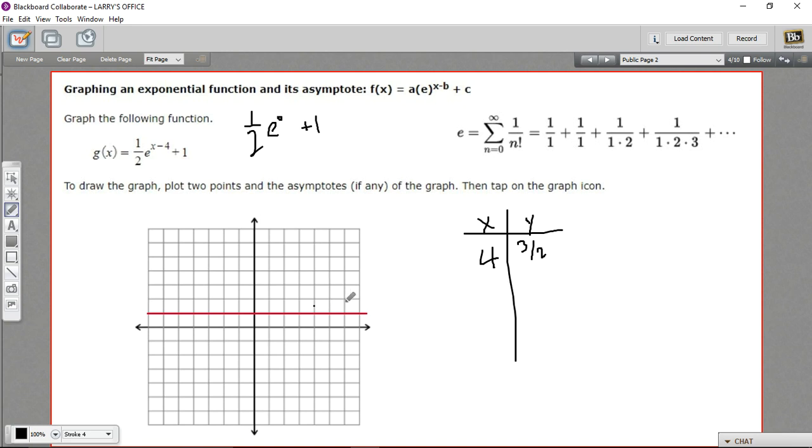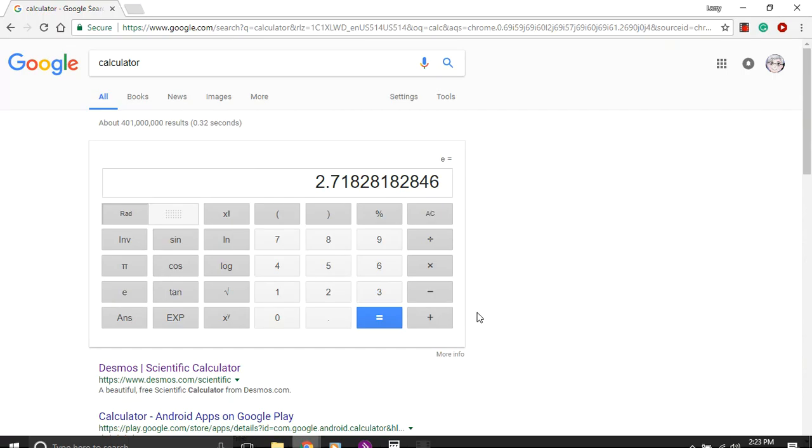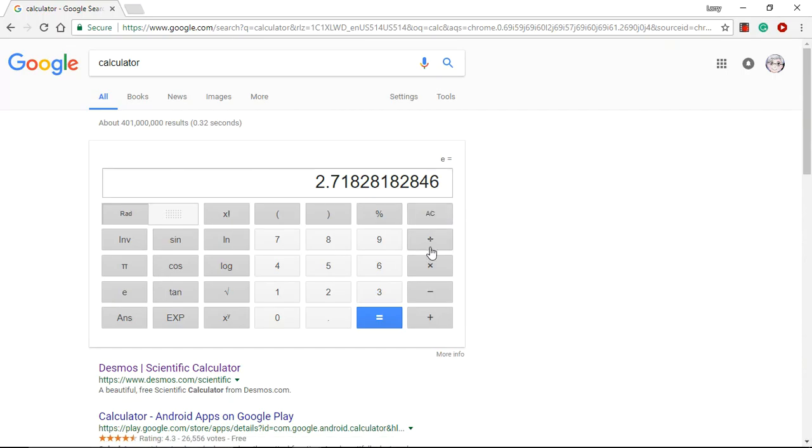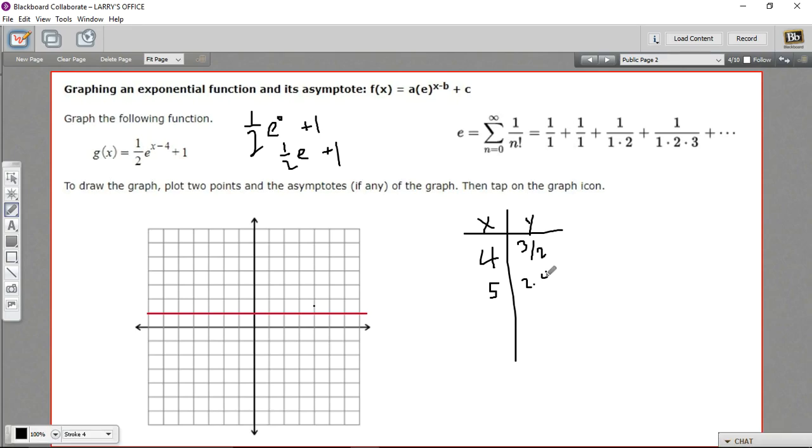Let's see what happens if we plot one more point to the right, at 5. That would make this e to the first power, so 1 half e plus 1. Well, e is 2.7. Let's multiply that by 1 half, which is dividing by 2, and add 1. We get basically 2.4. So we'll put that in: 5 and 2.4.